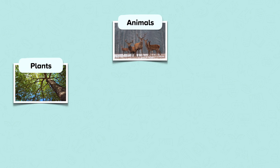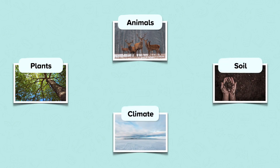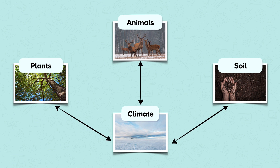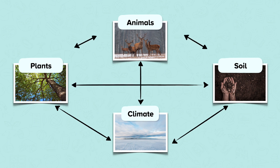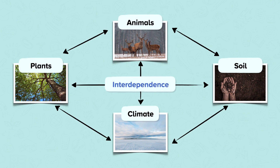Each aspect of the ecosystem, whether biotic or abiotic, interacts with the others and is reliant on them. For example, the climate will determine how effectively rock is weathered and organic matter decomposed, therefore influencing the soil type. It will also determine which plants and animals can survive. In turn, the soil also influences which plants will thrive, and which animals use them as a food source. Once plants and animals die, they are decomposed and nutrients are returned to the soil. This is known as interdependence.